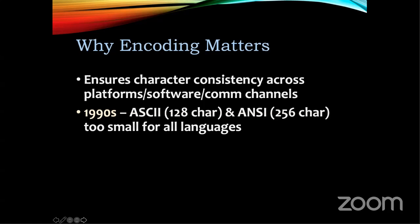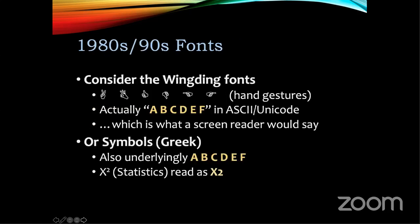Up to the 90s a lot of computers in the U.S. were using ASCII or something called ANSI. ASCII has 128 characters and ANSI has 256, which is too small to accommodate all the characters in every language — so even sighted users had problems. For example, with the Wingdings font, different numbers represent different hand gestures. On a screen reader it doesn't tell you what the character looks like — it only tells you the underlying encoding. So 'A' might be read as a hand with two fingers raised, and 'F' might be the hand pointing forward. This also used to happen with Symbol fonts for Greek, which were underlyingly encoded as A, B, C, D, E, F instead of alpha, beta, gamma.